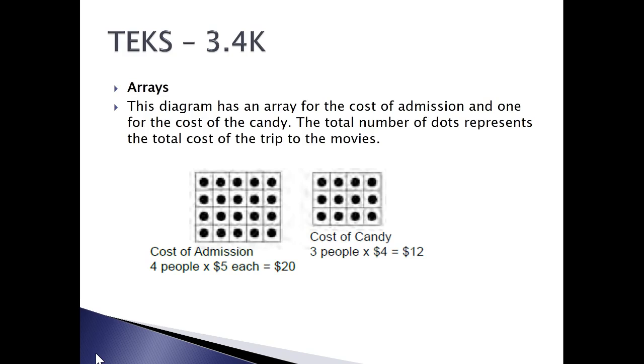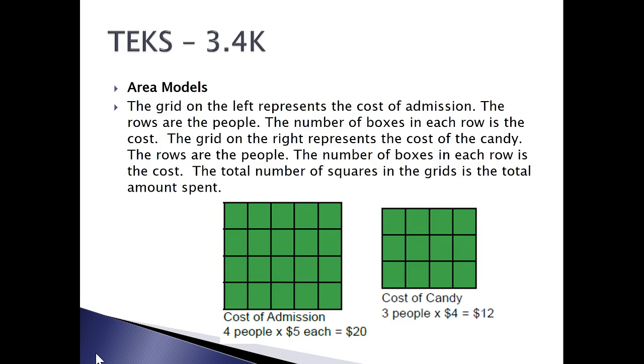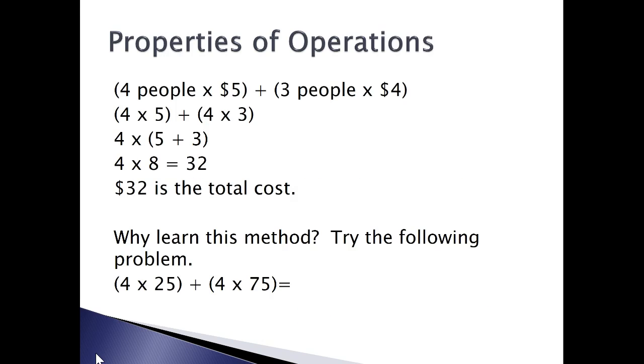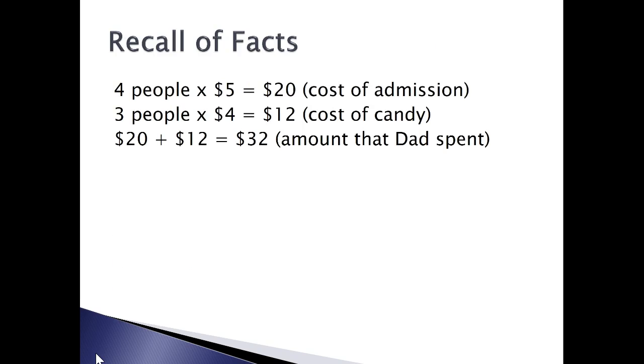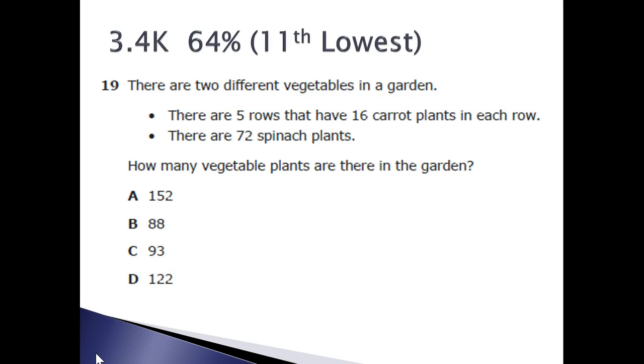You can also use arrays for this same problem, or area models. Notice that the total number of squares in the grids would be the total amount spent. Then the other strategy mentioned was properties of operations, where you can write four people times five dollars plus three people times four dollars. You basically have four times five plus four times three, or four times five plus three, which is four times eight, which is thirty-two. Now, recall of facts is another way we could do this. If the kids really know four times five is twenty and three times four is twelve, just add those two numbers together. That's where we want to get to, is having the kids know these facts with automaticity.